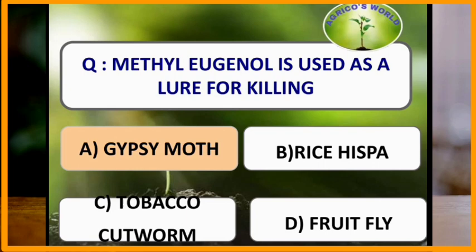Methyl eugenol is used as a lure for killing gypsy moth.